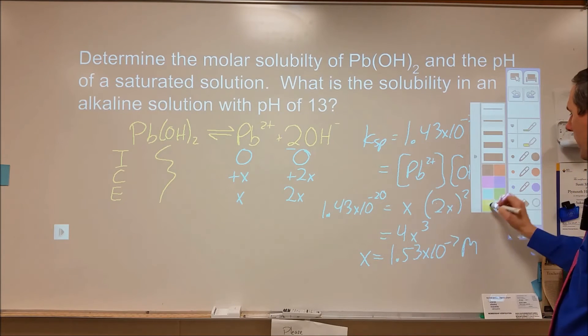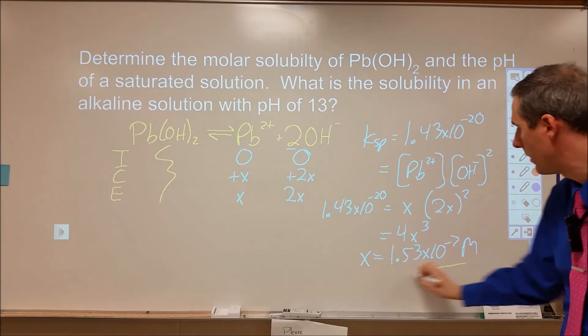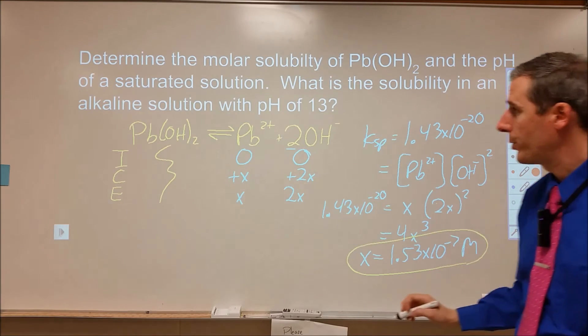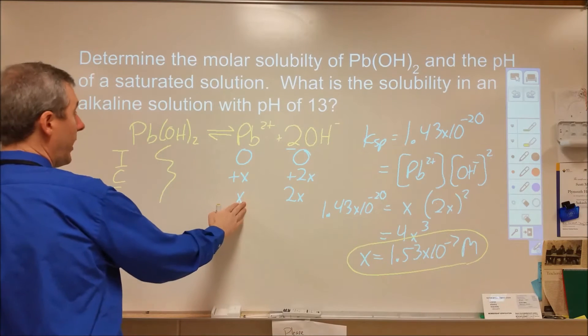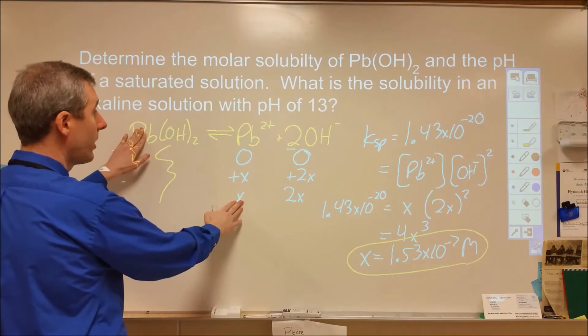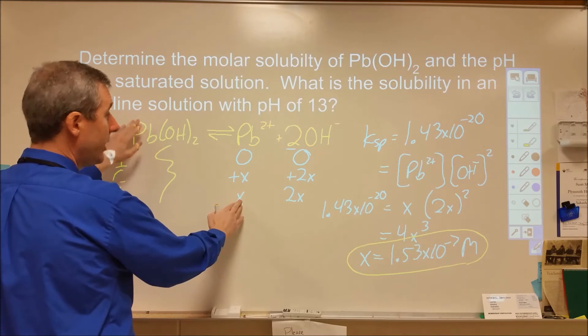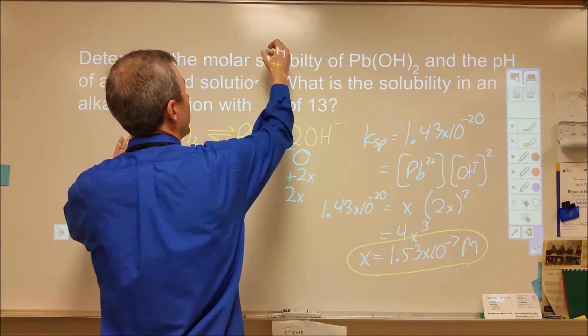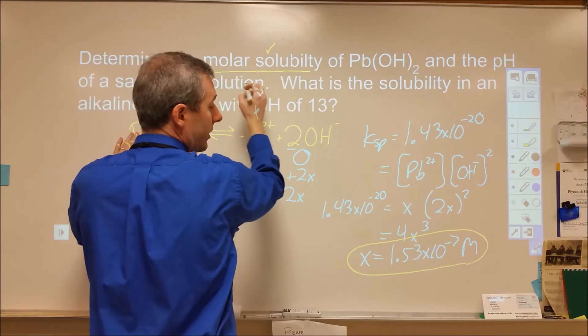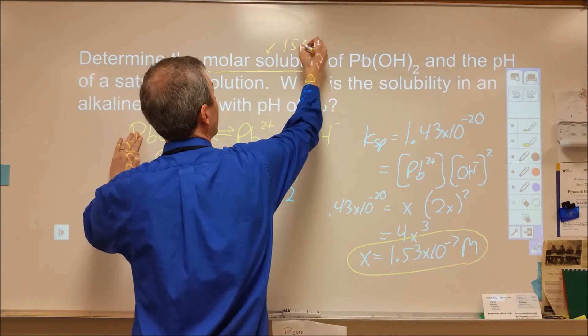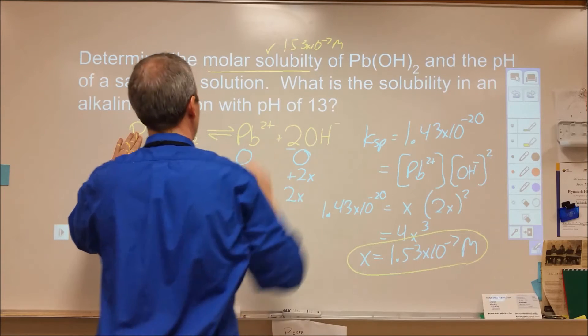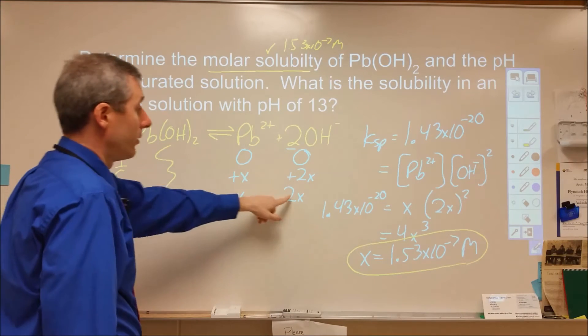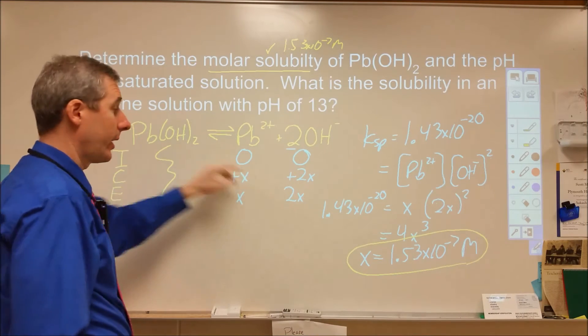This one's a little more complicated. What is x? x here is the lead 2+ ion concentration, and that's in a 1 to 1 ratio with my salt dissolved. So this is my molar concentration. This is my answer to this question here: 1.53 times 10 to the negative 7th molar.